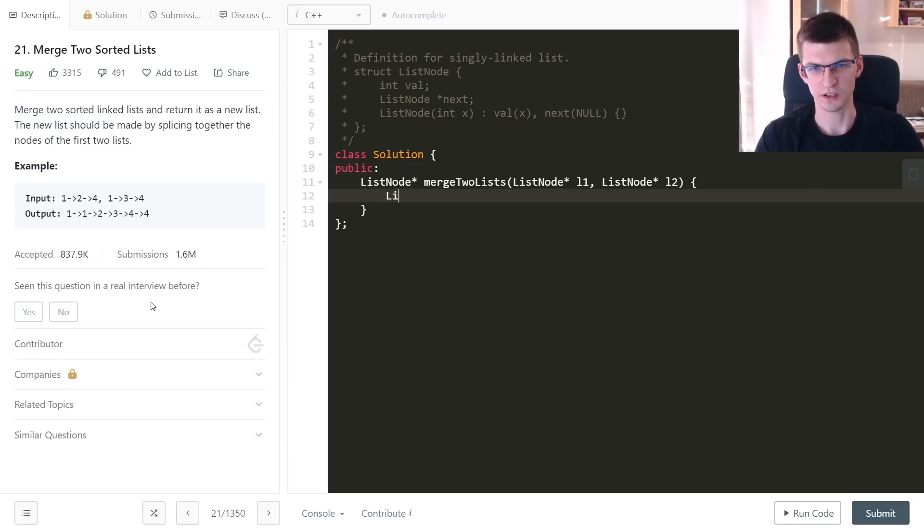Finally implementation, we need to create start. There will also be last, the last node in combined list so we would know what next pointer we should change. Compare first values of both lists.